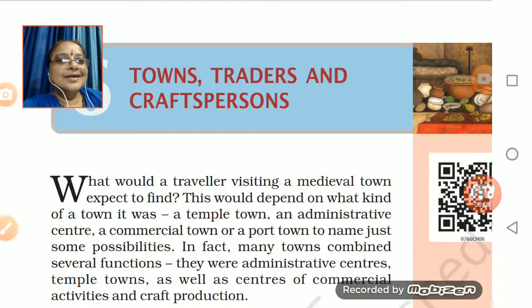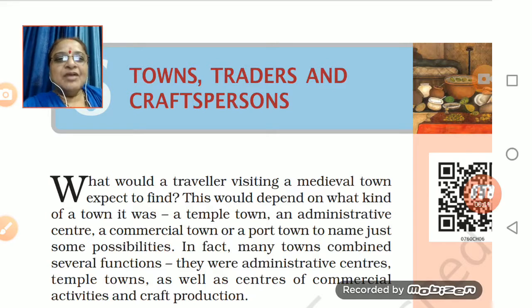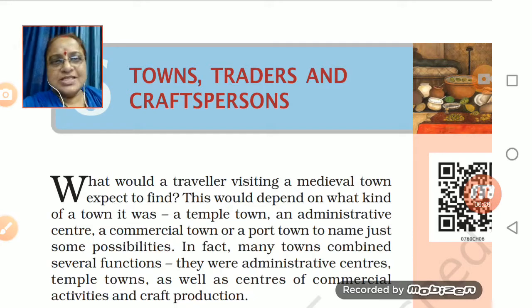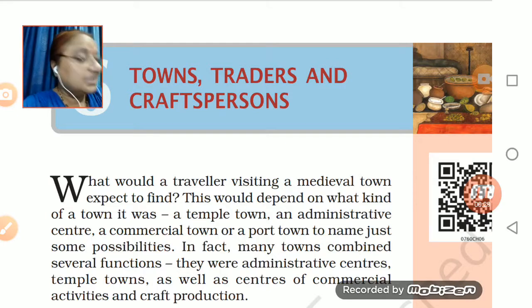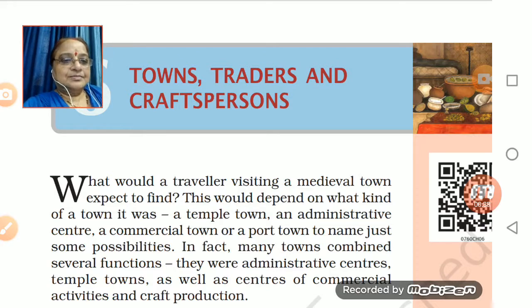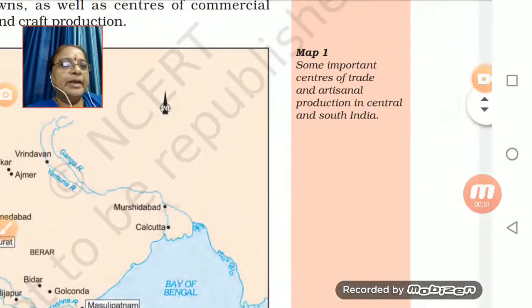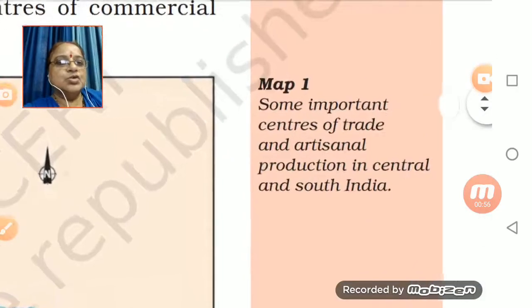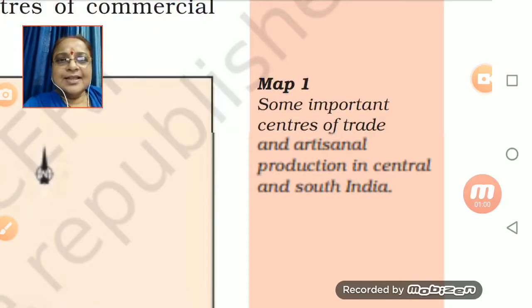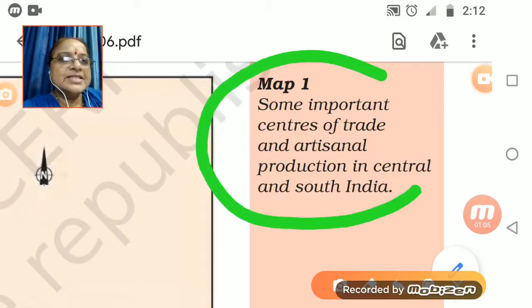Students, we have started Chapter 6 in History — one of the very interesting chapters. Towns, Traders and Craftspersons — I've given you an introduction. This chapter has a lot of information. Right now we are looking at the map book, and this map is showing us some important centers of trade.